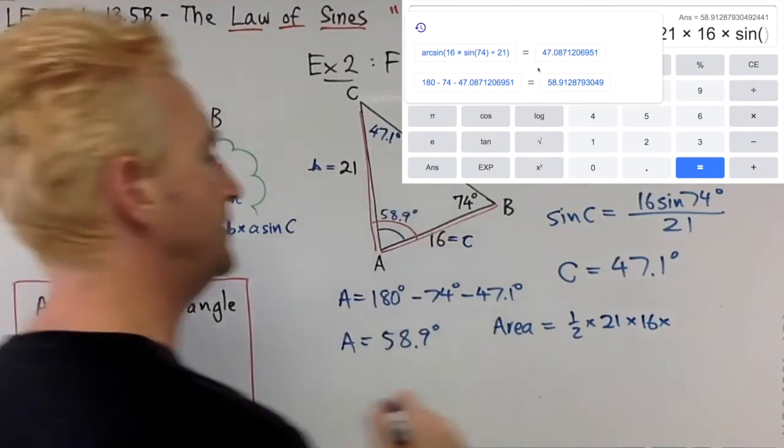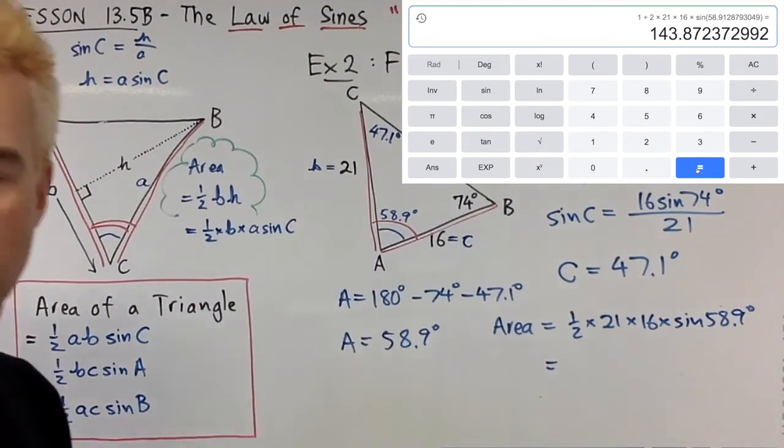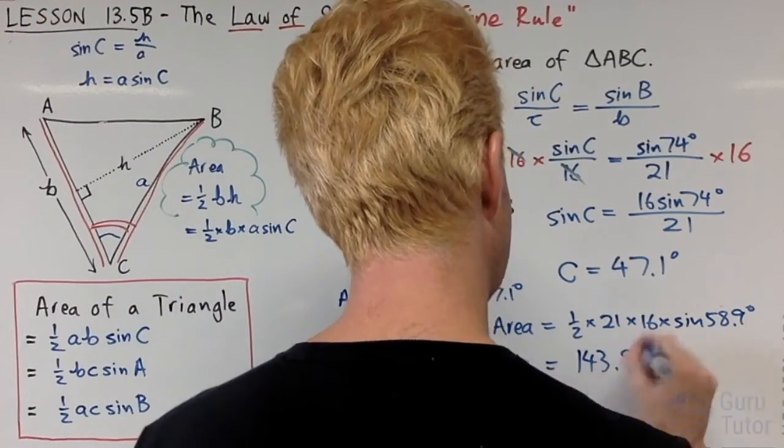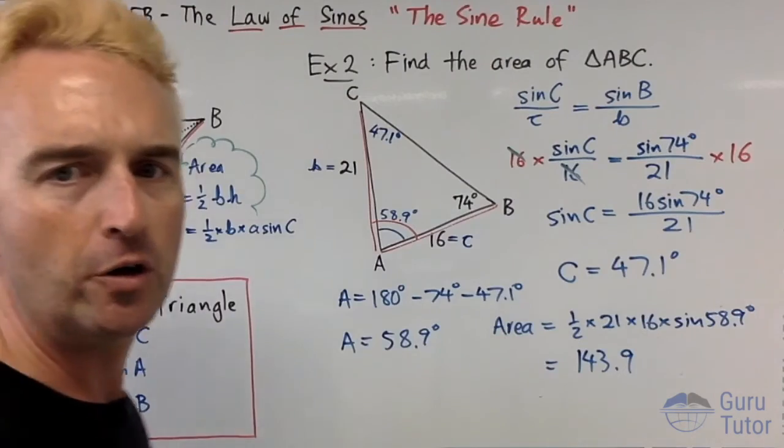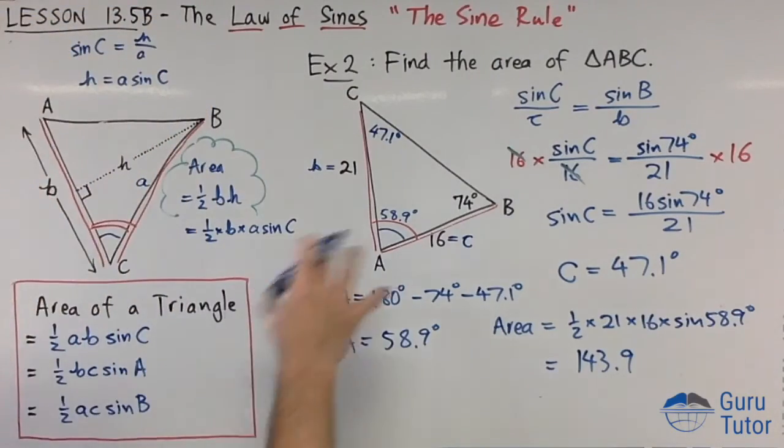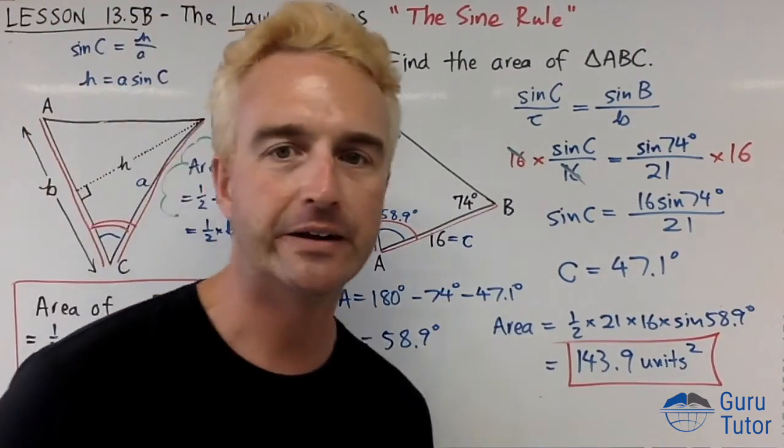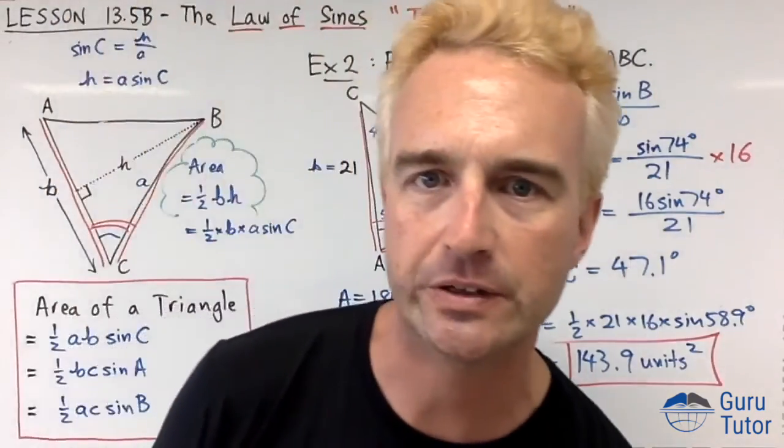Times sine of the angle between them, 58.9. The answer is 143.9. Make sure your calculator is in the correct mode. Remember this is an area, we don't have any units here but you could just write units squared. That is how you find the area of a triangle using trigonometry.